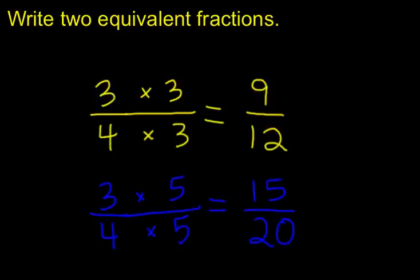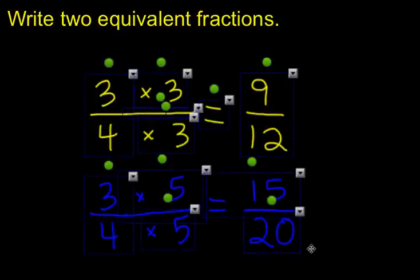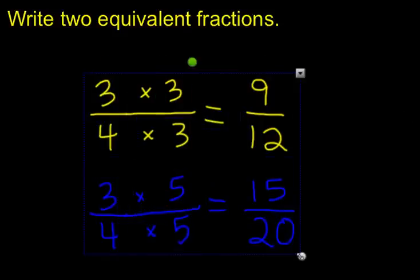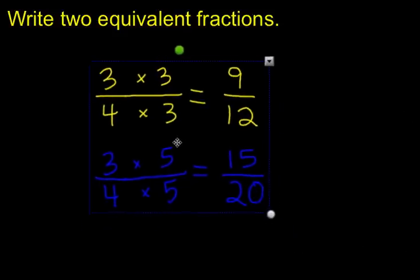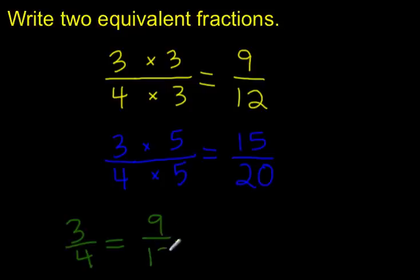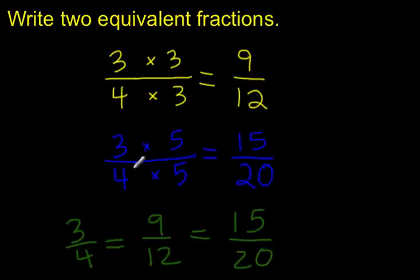As a quick summary, putting these together: 3 fourths is equivalent to 9 twelfths, and it's also equivalent to 15 twentieths. They're all equivalent.